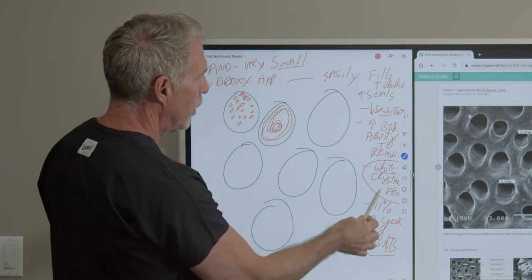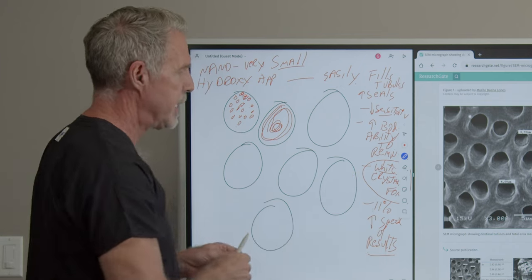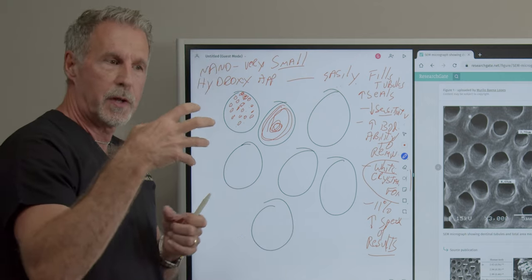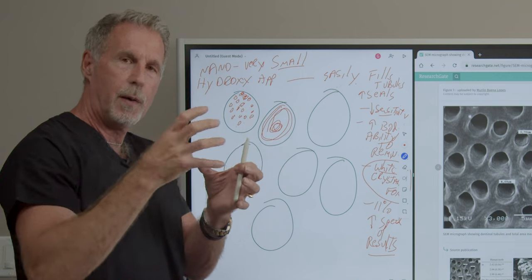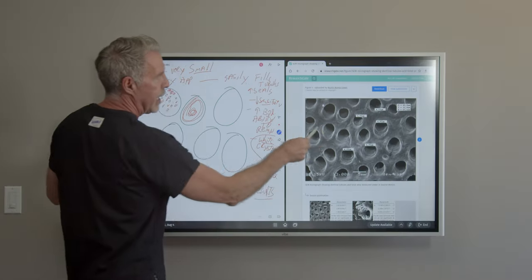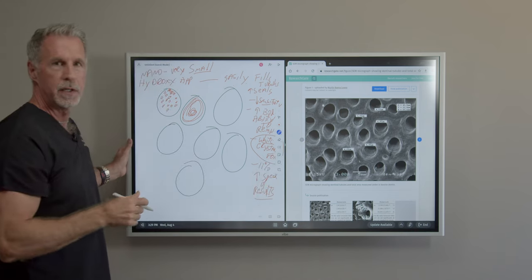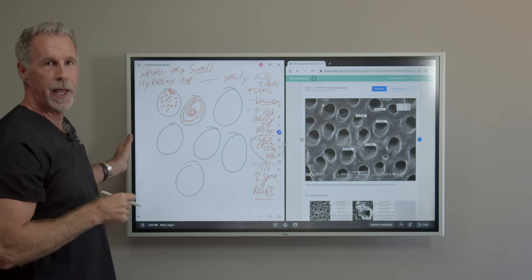And then also, why did we put the percentages that we put in? Because they work together. Some of the larger size, some of the smaller size, so they help fill this area, coat over, so we can get maximum seal, so we can get a maximum end result.